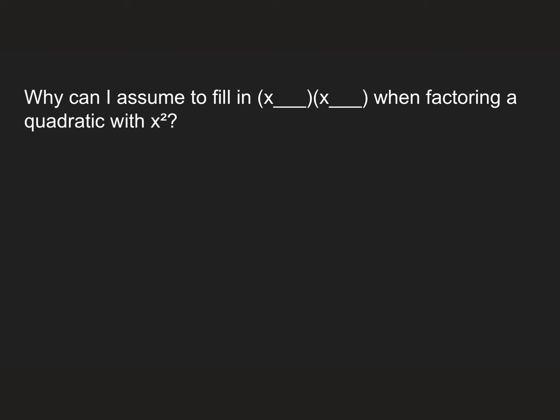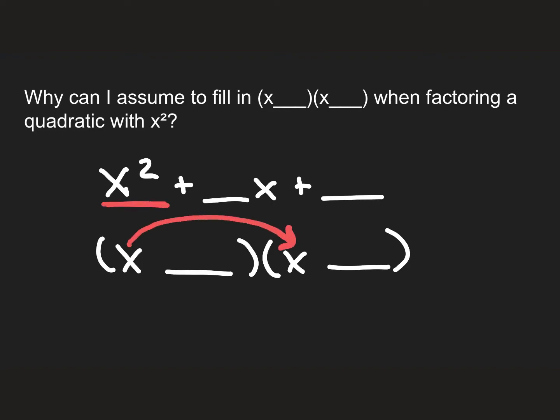The next question says, why can I assume to fill in x and x when I factor a quadratic with an x²? Whenever I have a quadratic with an x² plus something x plus something, we automatically assume that it's x with an x. The reason is, we know that to get this first term is the result of multiplying the first term in the first parentheses times the first term in the second set of parentheses. And the only way for us to get x² is to multiply that x times x. So this works only because of the fact that this is x². If there was something in front, we would have to approach the problem differently.